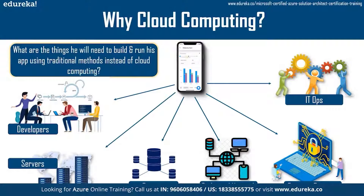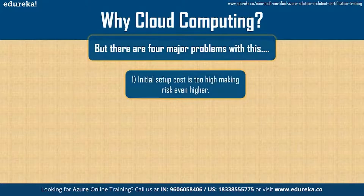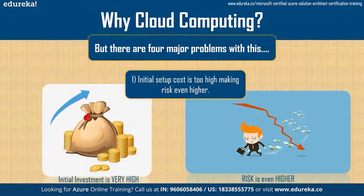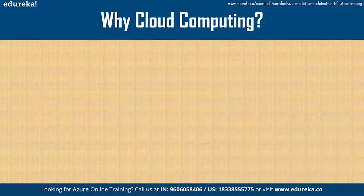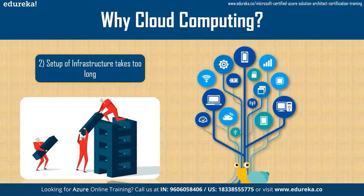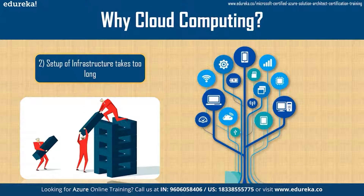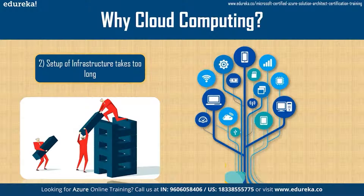John figured there would be four major problems with this setup. The first problem is that owning his own infrastructure would require a huge amount of money, and because of the large investment in setup, this would also greatly increase the risk if the app fails. The second problem is that the infrastructure would take too long to set up — he would have to buy all the components, hire IT technicians to install and connect everything — meaning more money and more time.